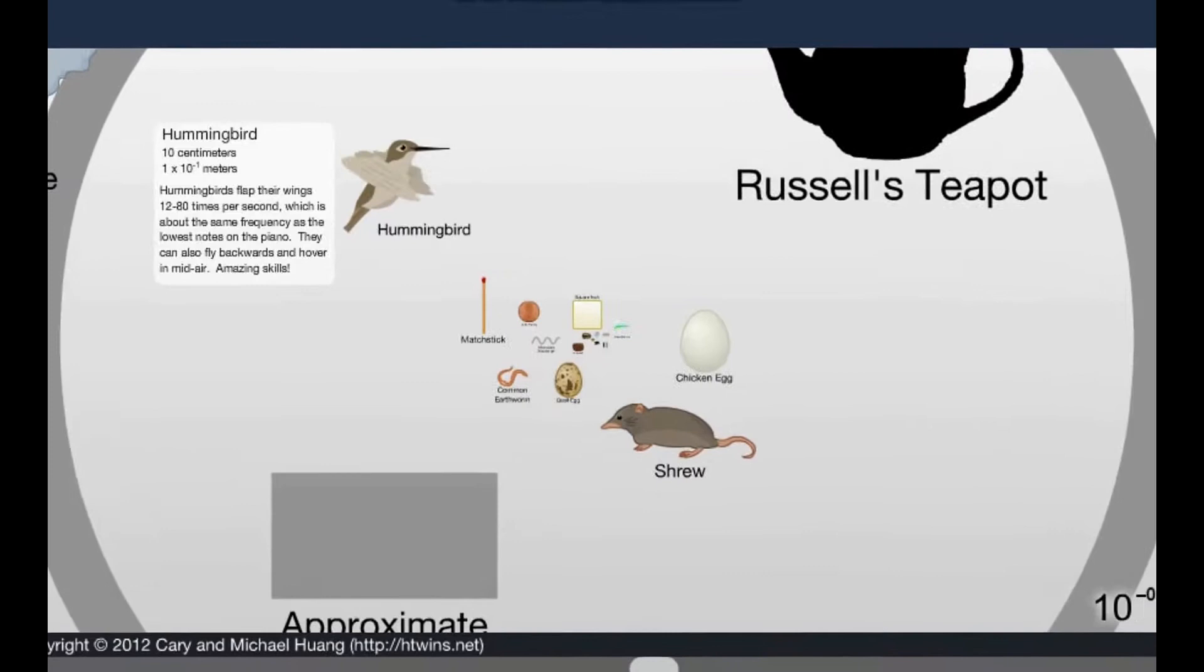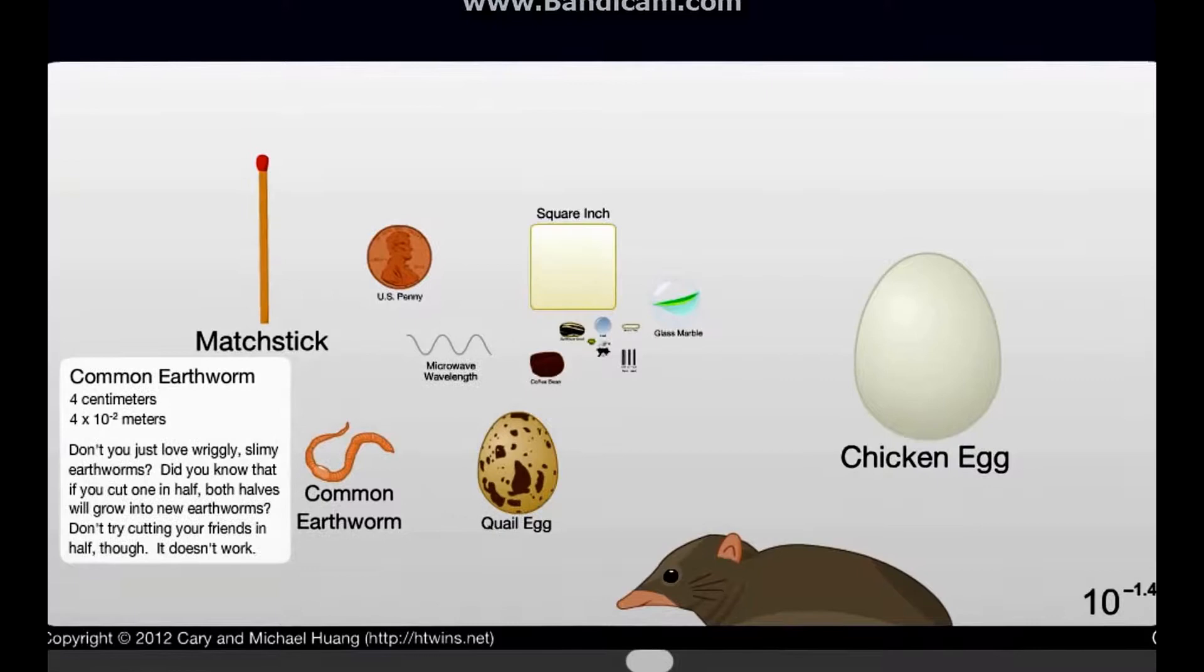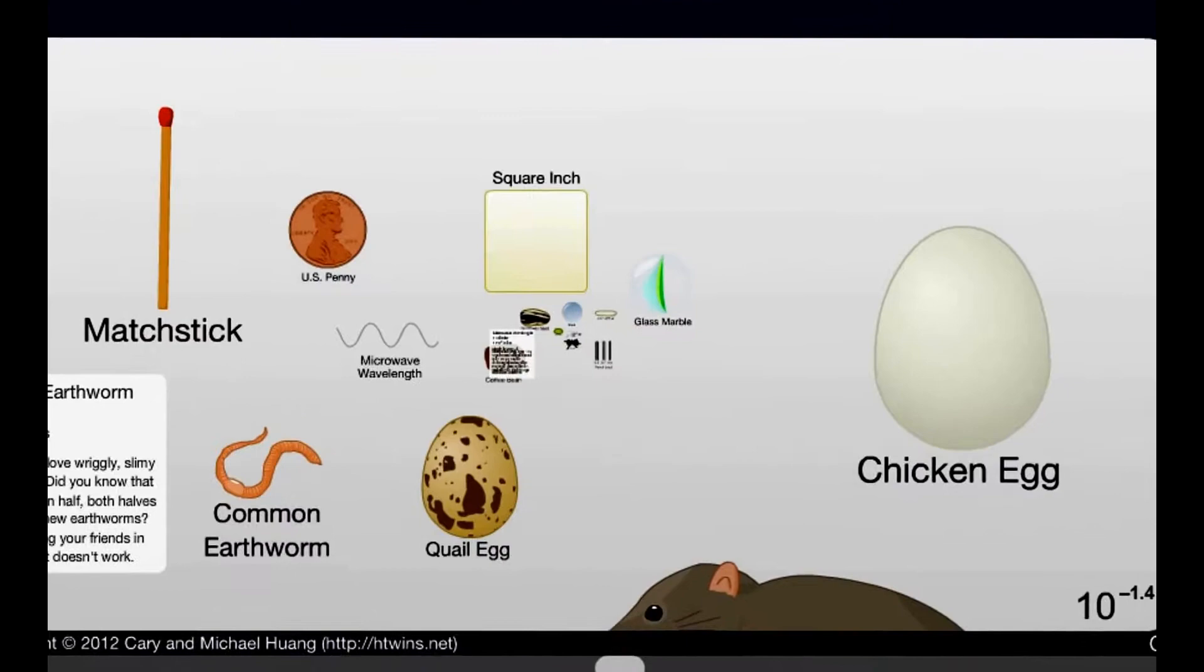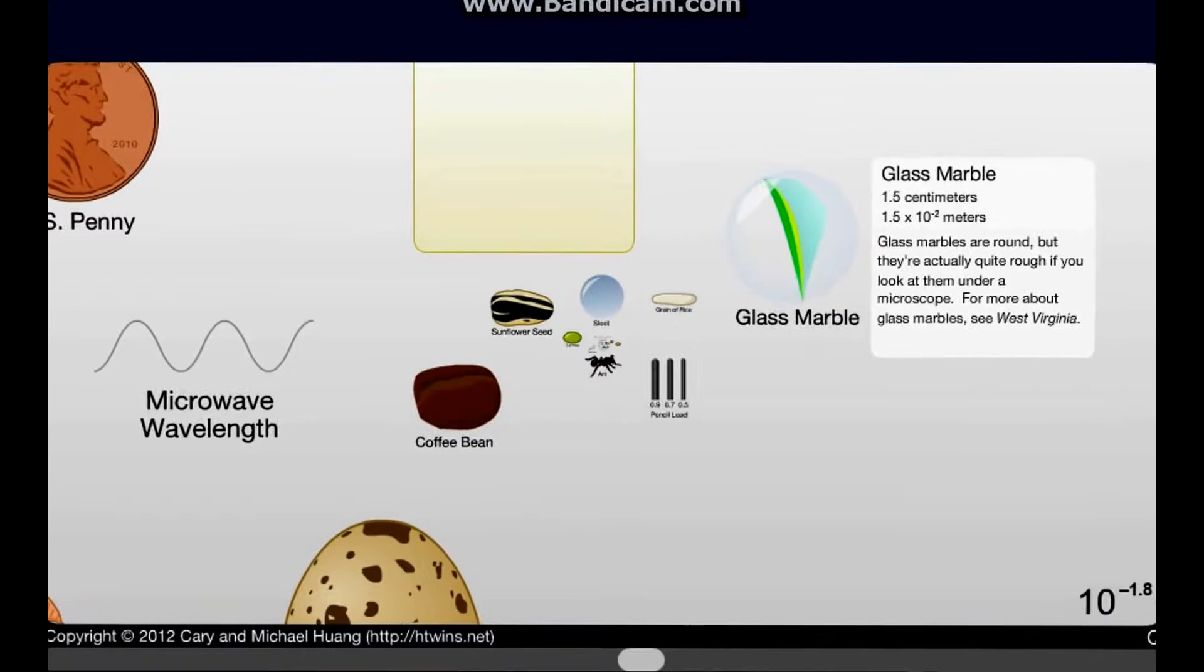Then you got a little hummingbird here. Look at that, 10 centimeters. Chicken egg smaller, I guess, 5.5 centimeters. The common worm. Man, that little common worm compared to that huge earthworm. Microwave length? Okay, that's actually pretty big. One centimeter is one microwave length.